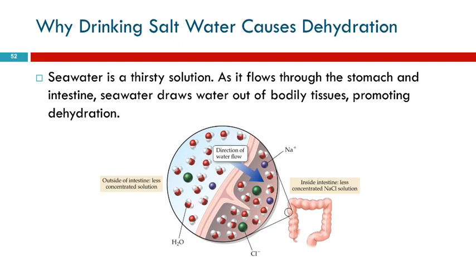I think of it this way: nature likes to level everything out. You've got a high concentration and a low concentration — nature doesn't like that separation, so it's going to do what it can to equalize things. The walls of your intestines and the walls of your cells allow water to move in and out, but they don't allow sodium and chloride ions to move very well. So all that can move through here is the water, and the water will flow to the more concentrated solution to make it less concentrated.